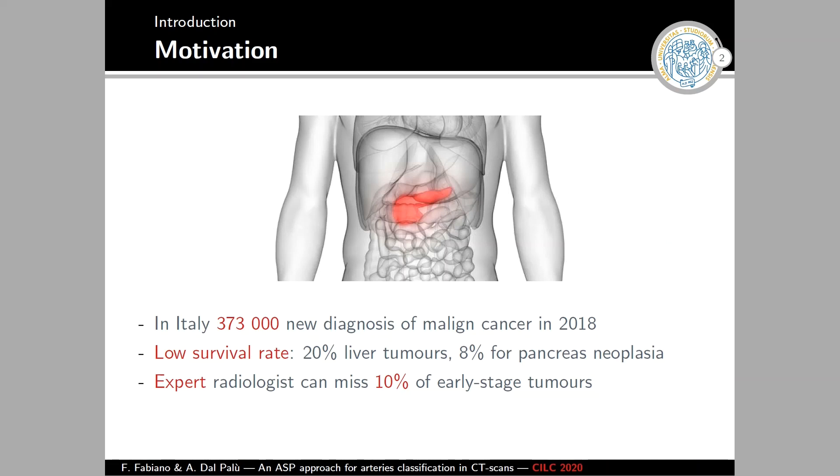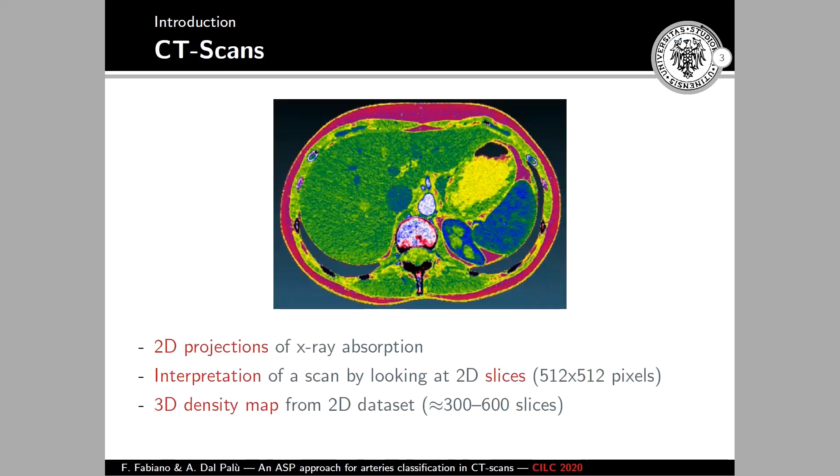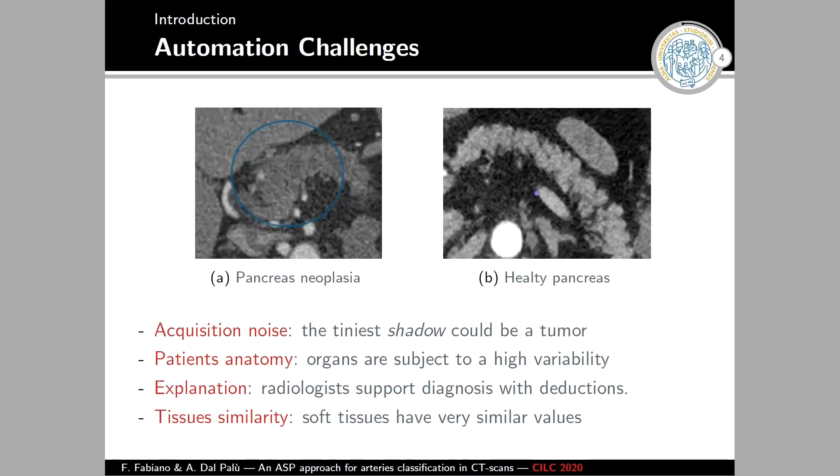The problem with this type of detection is that it's really hard to perform and even expert radiologists can miss 10% of the time. The first type of tumor detection is usually done through CT scans. CT scan is a technology that provides a representation of the internal tissue of the patients through X-ray absorption. The output of this technology is usually a set of 2D images that, when stacked one upon another, provide a 3D density map of the patient's body.